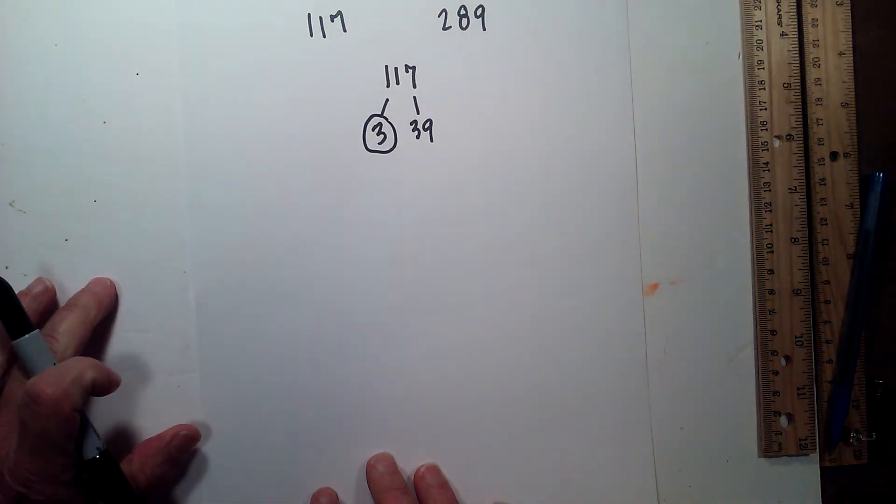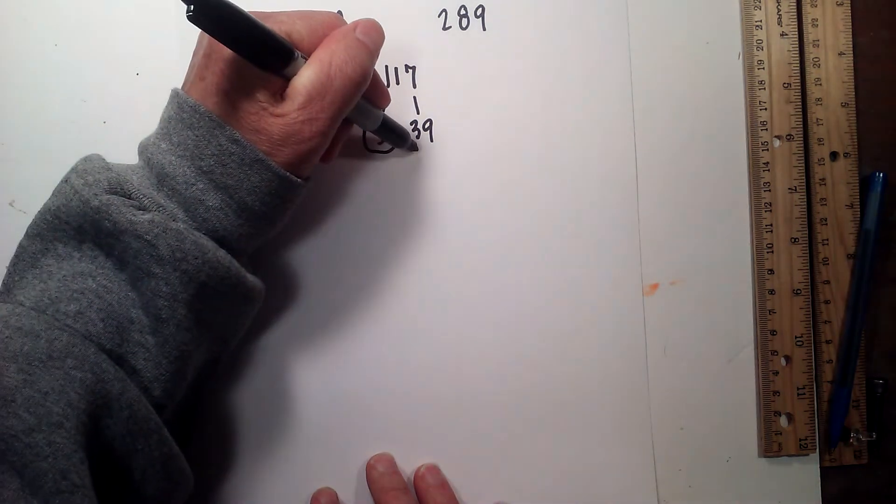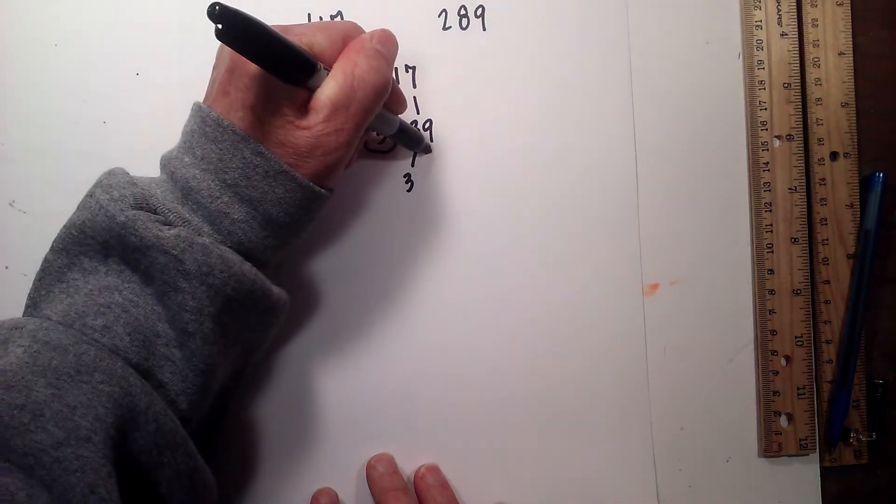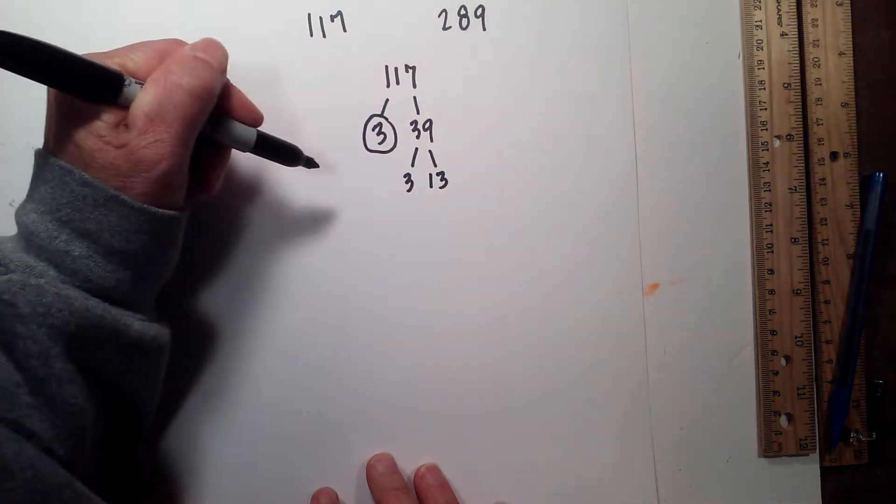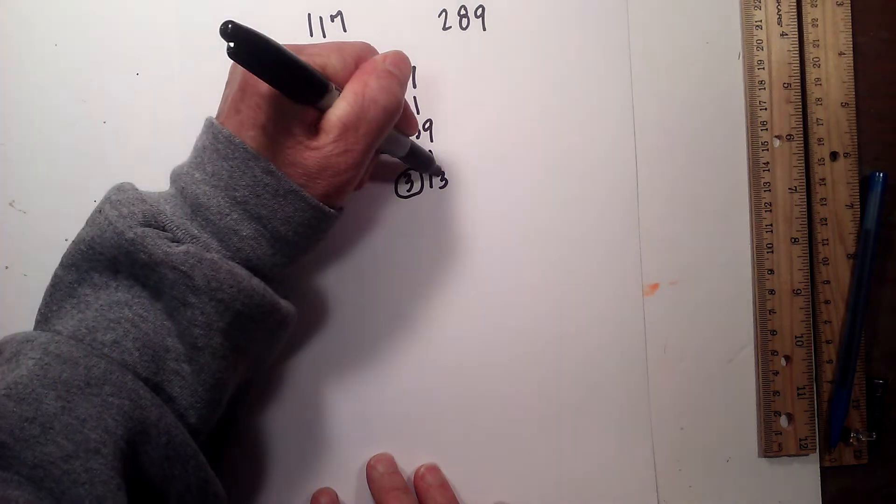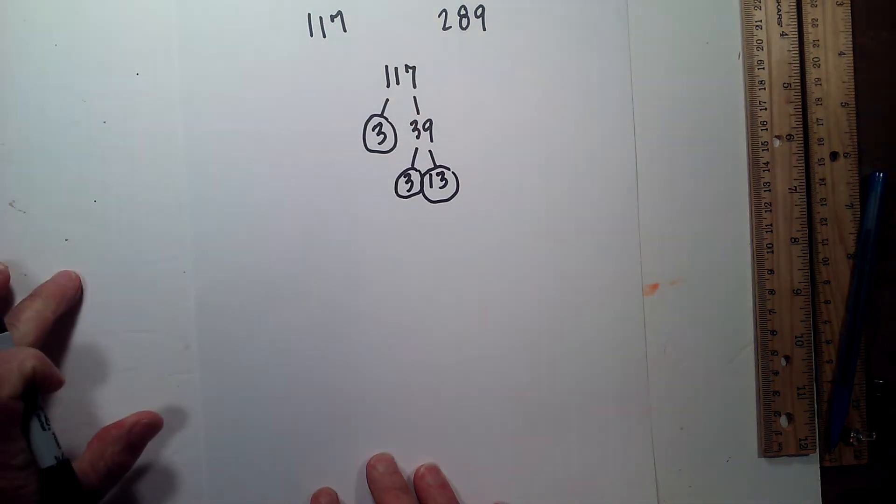I will circle the 3 because it is prime. And now 3 times 13 equals 39. I will circle the 3 and the 13 because they are both prime.